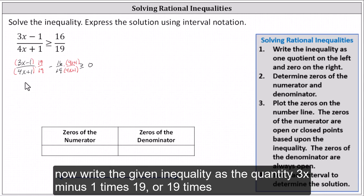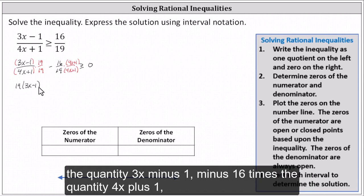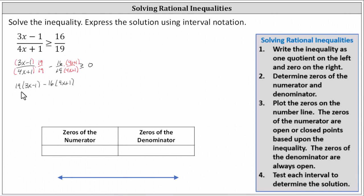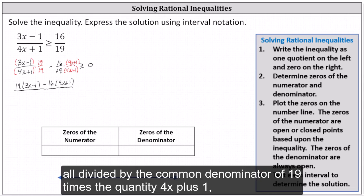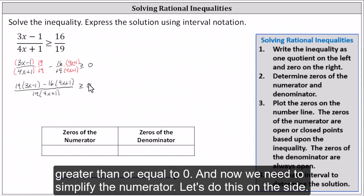We can now write the given inequality as 19 times the quantity (3x - 1) minus 16 times the quantity (4x + 1), all divided by the common denominator of 19 times the quantity (4x + 1), greater than or equal to zero.